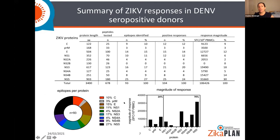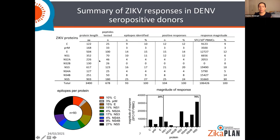Looking in more detail at where these recognized areas are in the Zika virus, this summary shows where all the different proteins account for recognition. We found cross-reactive epitopes in all of the proteins we examined, with the exception of NS2b, where we did not find any epitopes. Other than that, we found epitopes in all Zika virus proteins.